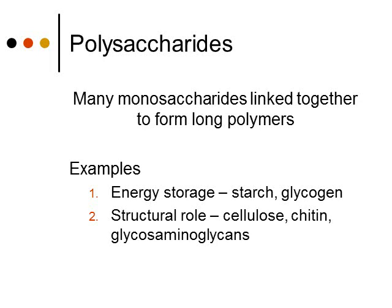Other polysaccharides are used for structural support. This includes cellulose, which is fiber in plants; chitin, which makes up the exoskeleton or hard covering on lobsters, crabs, and insects; and glycosaminoglycans, which are found in animals, usually in cartilage, helping give structure to things like your ears.